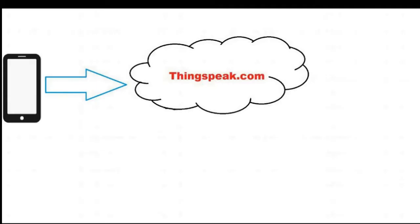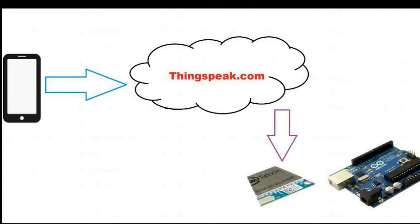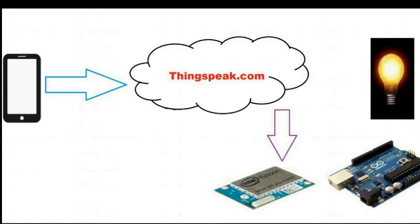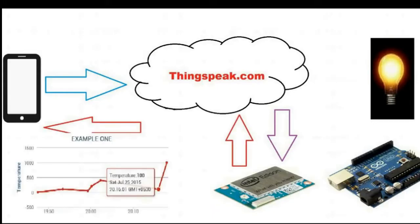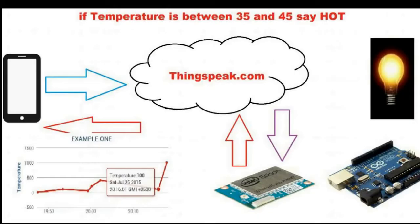First of all, you must have a ThinkSpeak channel. With the smartphone and this app, you can send data to the ThinkSpeak channel, which can be retrieved either by Intel Edison or Arduino. With that data, you can glow a bulb or do Internet of Things. You can send data back to the app, which can be viewed as a chart. You can also set conditions in the app, and if those conditions are met, you will hear a pre-recorded message.